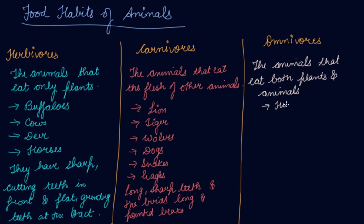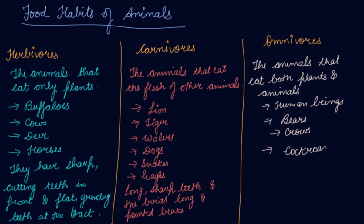Examples of omnivores include human beings, who eat both plants and animals. Bears and crows are also omnivores. Cockroaches are omnivores as well. All these are omnivore animals.